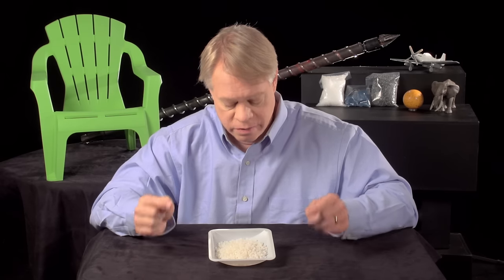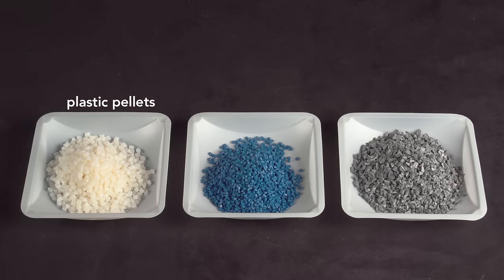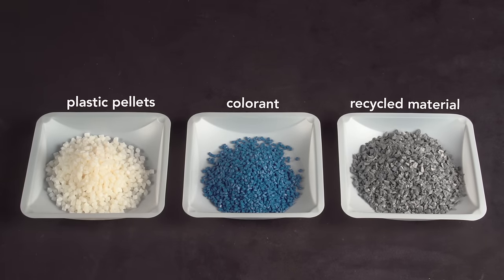All injection molded objects start with these plastic pellets, which are a few millimeters in diameter. They can be mixed with small amounts of pigment, called colorant, or with up to 15% recycled material then fed into the injection molding machine.